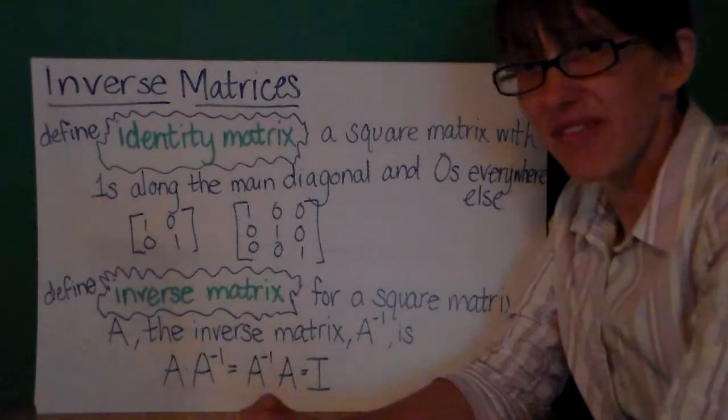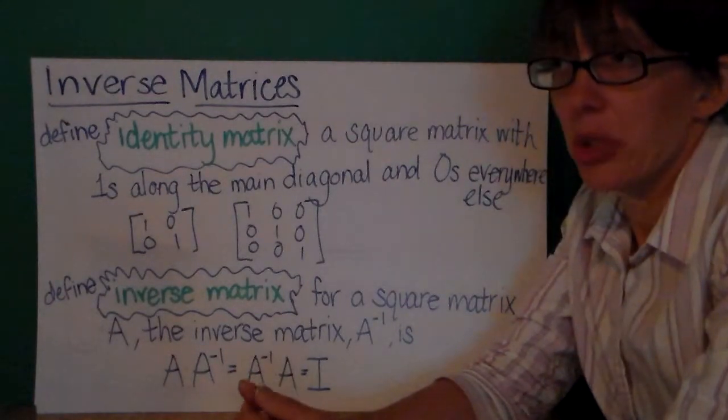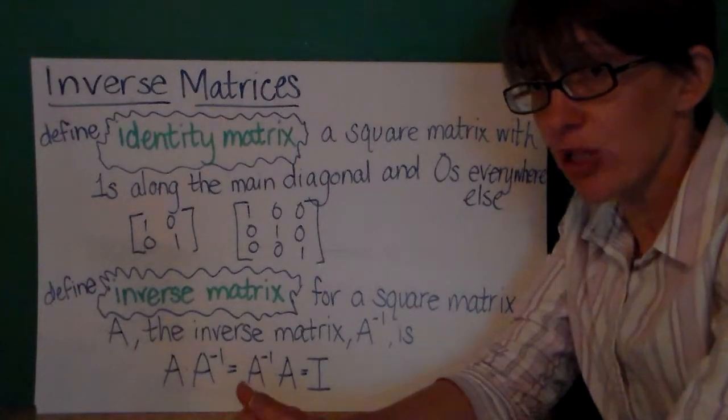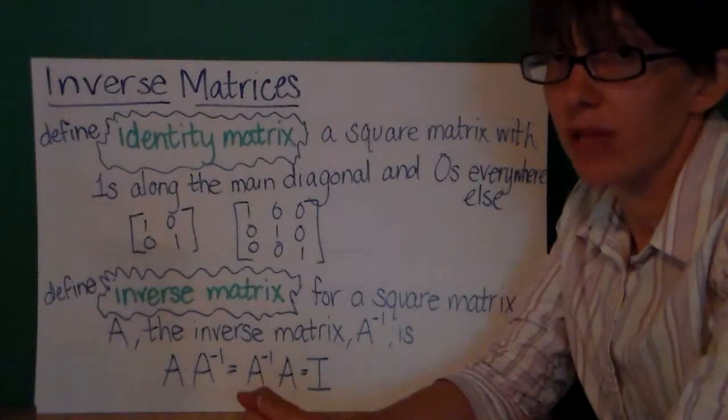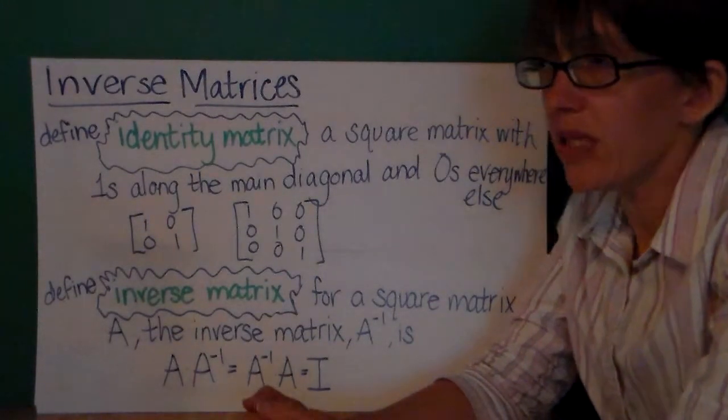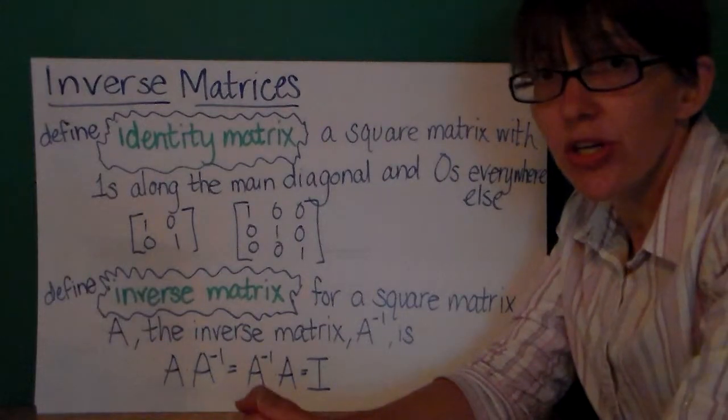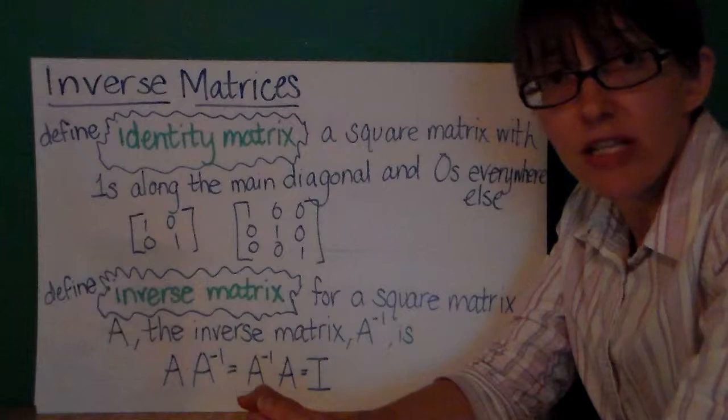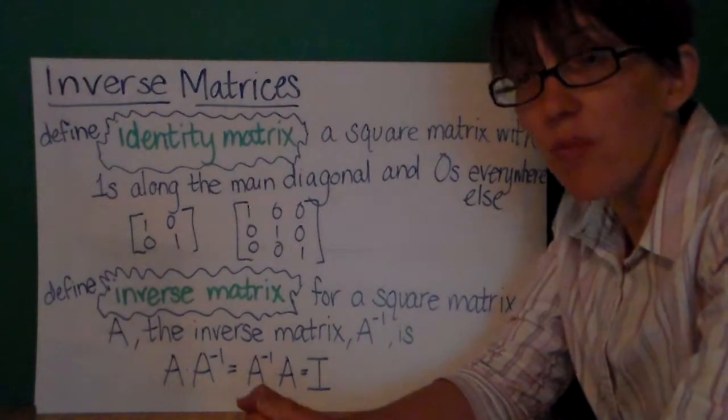You know how real numbers have an inverse? For example, the multiplicative inverse of 2 is 1/2 because when you multiply 2 and 1/2 you get 1. The multiplicative inverse of 2/3 is 3/2 because when you multiply 2/3 and 3/2 you get 1.